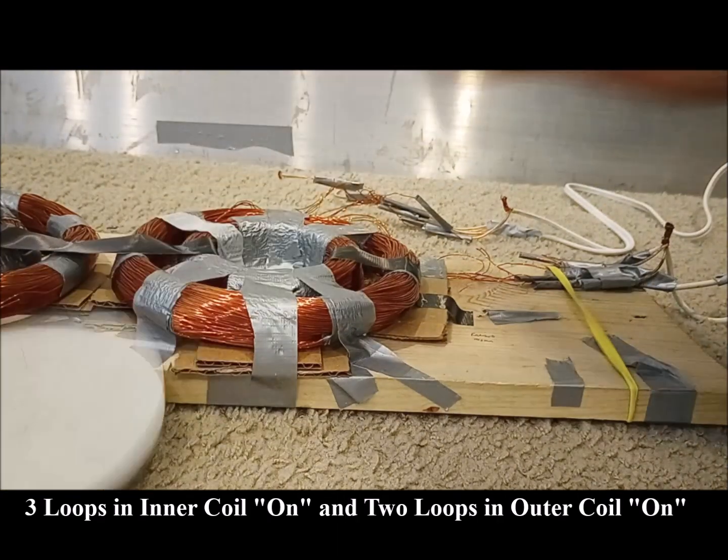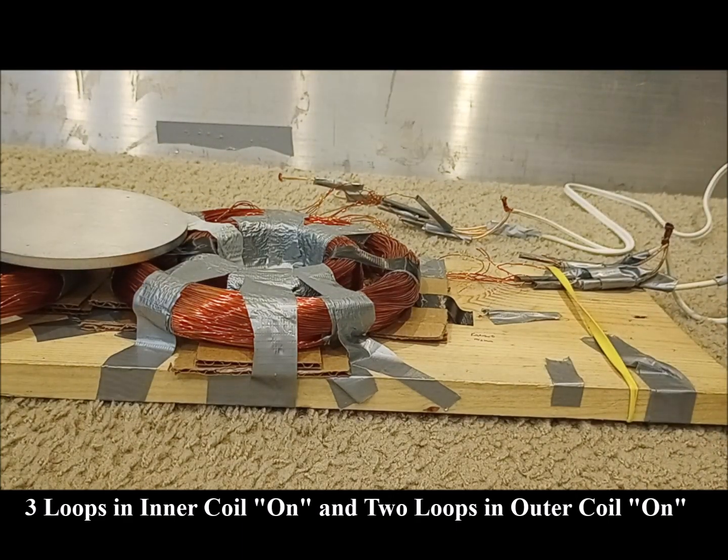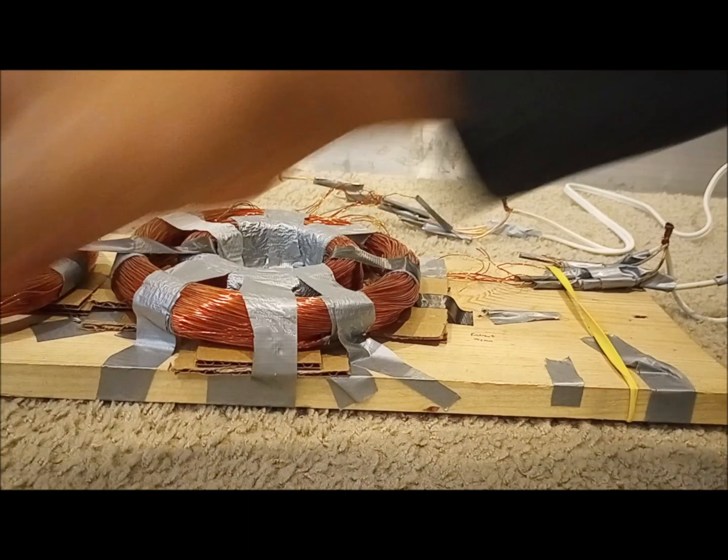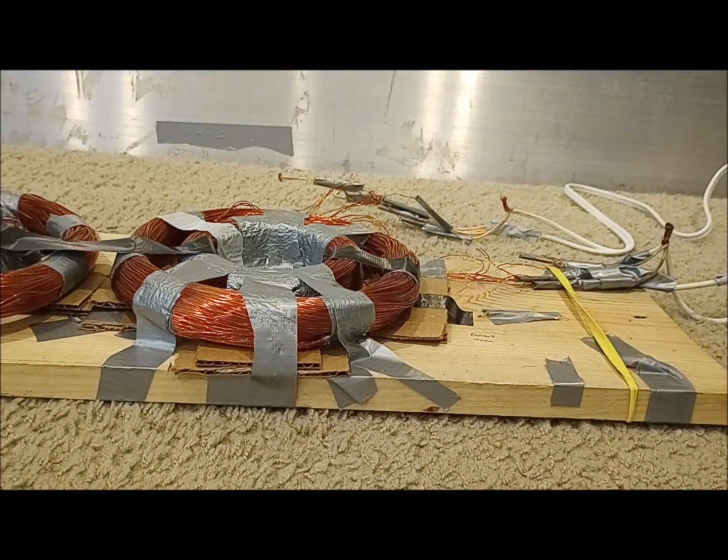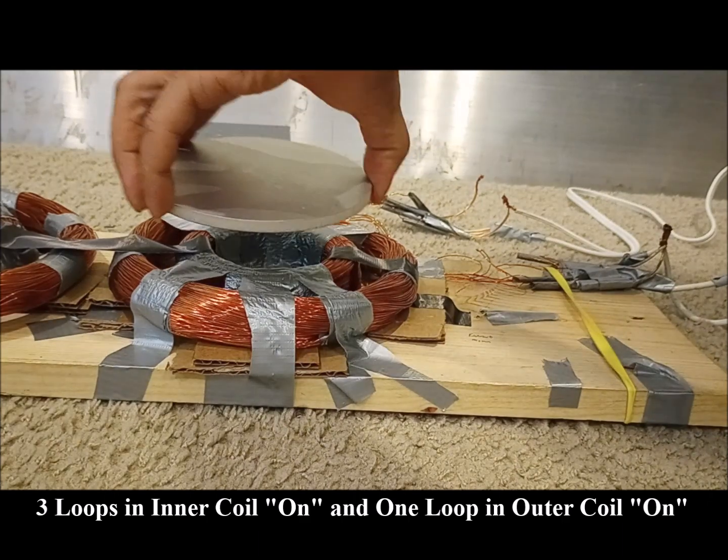This left only two of the loops in the outer coil energized while all three loops in the inner coil were energized. This still resulted in the disc being ejected. De-energizing a second loop from the outer coil again resulted in no stable levitation.